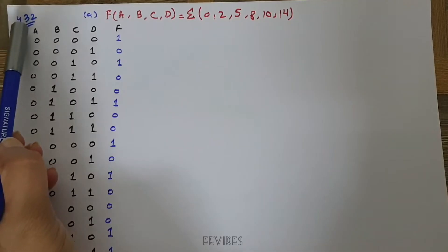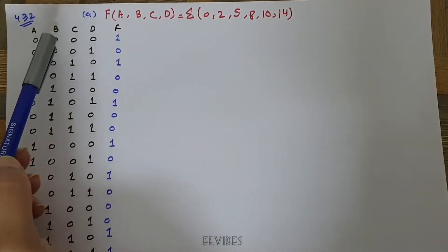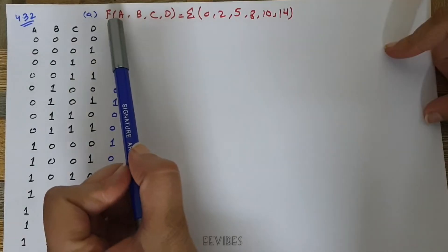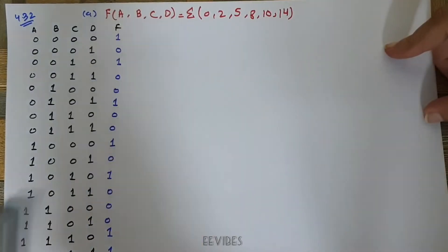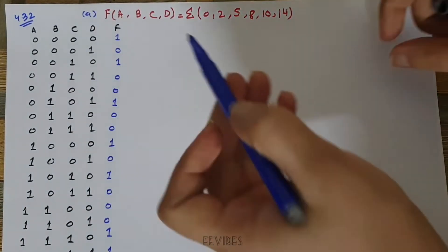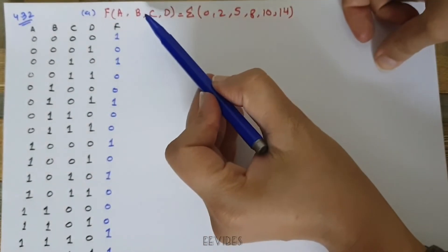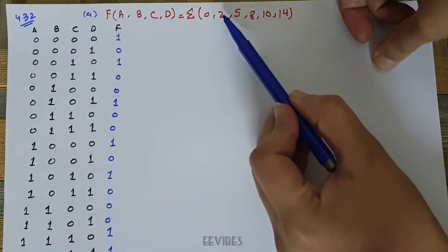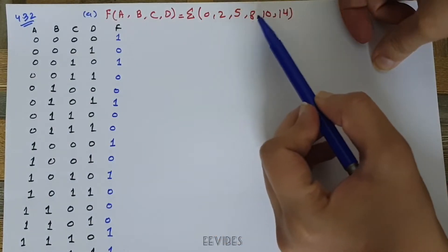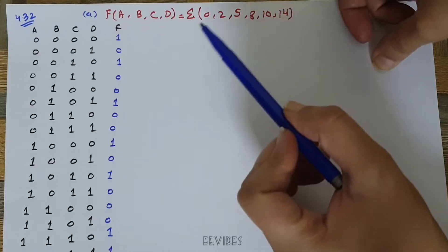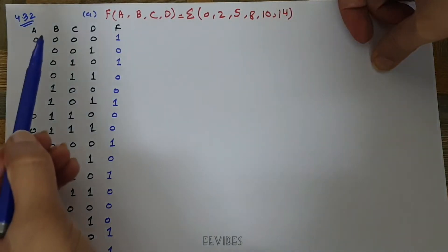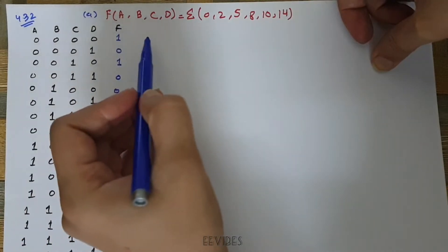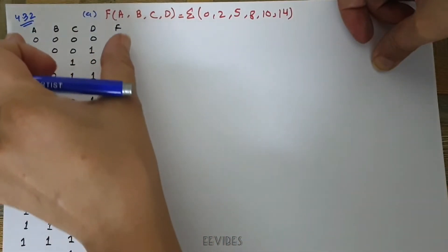This is problem 4.3, part a and part b. The function has four variables A, B, C, D and is given as the summation of minterms 0, 2, 5, 8, 10, and 14. For implementing the function using the multiplexer, the first step is to construct the corresponding boolean combination of the variables.